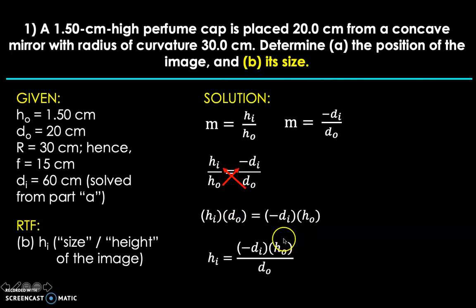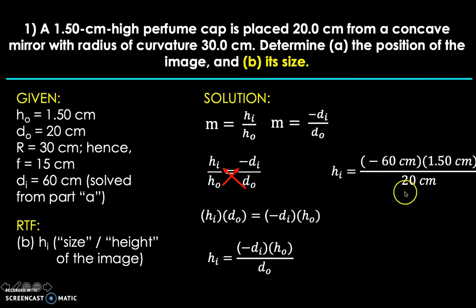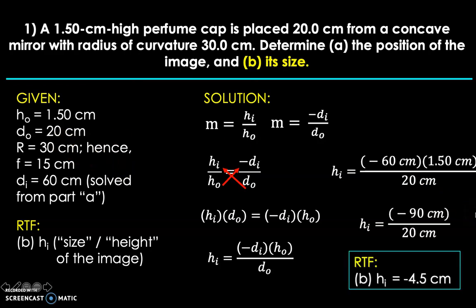And then let's isolate h sub i by dividing both sides of the equation by d sub o. So we just divided both sides by d sub o to cancel this and isolate h sub i. So we're gonna have this and then for the substitution, you're gonna have d sub i is 60 and then the negative sign should be affixed. So there you have it. And then the rest is just plug in 1.5 centimeters for the object height, 20 centimeters for the object distance. And then if you do the math, if you simplify that, you're gonna have h sub i or image height equals negative 4.5 centimeters. That's all.